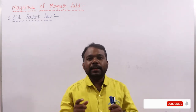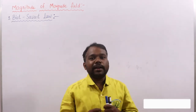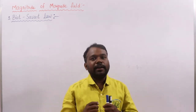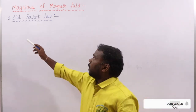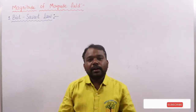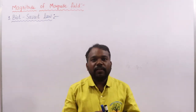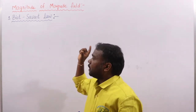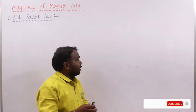Today we are going to discuss the magnitude of magnetic field produced by a current carrying conductor or current carrying wire. Two laws are proposed for determining this magnitude. The first law is called Biot-Savart Law. Both Biot and Savart conducted experiments on current carrying wire and identified the magnitude of the magnetic field.